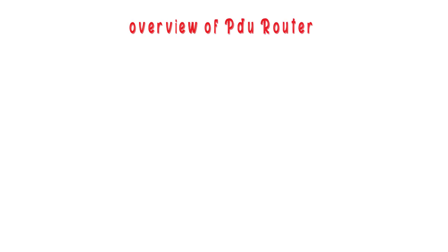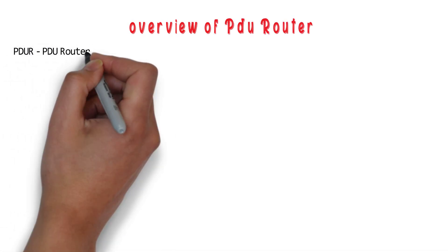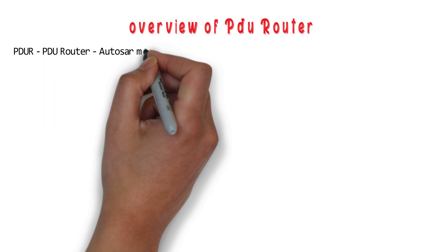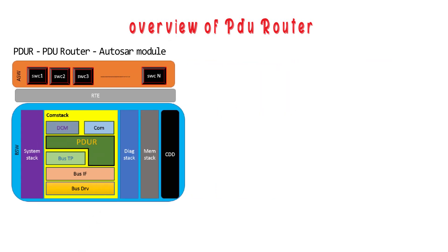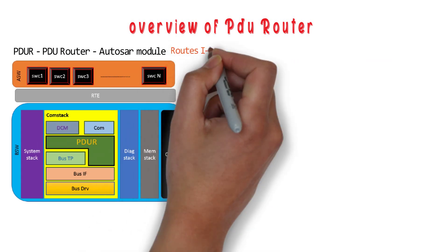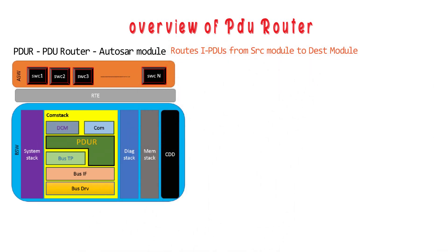PDU Router, short for PDUR, is an AUTOSAR module part of the ComStack. It routes IPDUs from a source module to a destination module.